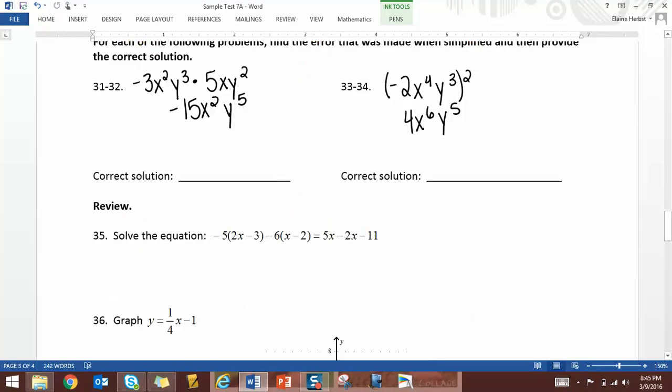31 and 32, you're asked to find the error that was made when simplified, and give the correct solution. So the error, let's see. If we have negative 3 times 5 is negative 15, that's correct. x to the second and x to the first should give you x to the third. And then y to the third and y to the second should give you y to the fifth. So that's the error there.